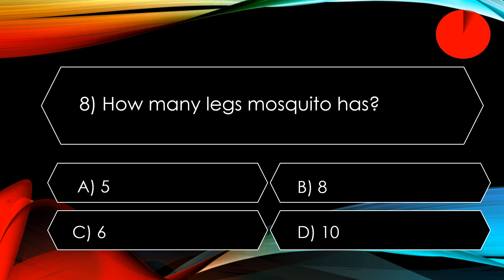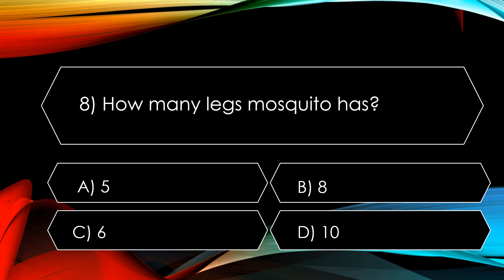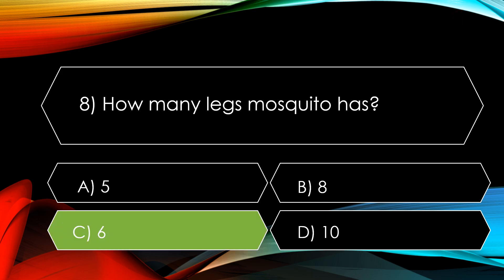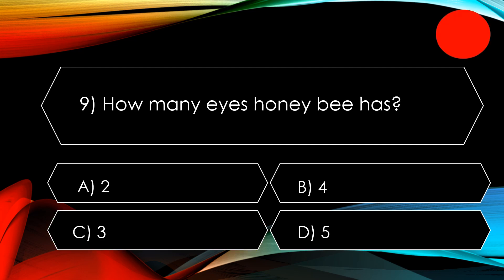Question number eight: how many legs does a mosquito have? The options are A. 5, B. 8, C. 6, and D. 10. The correct option is C. 6 — a mosquito has 6 legs.